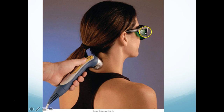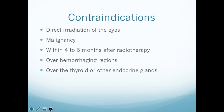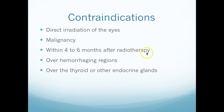Here's an example of application — the patient has goggles on, and you as the therapist will also wear goggles. You'll have parameters for the area you're going to dose and treat. Contraindications include direct irradiation of the eyes — hence the goggles — and malignancy, because ATP production and increased metabolic rate could feed a tumor. Within four to six months after radiotherapy the tissue is still vulnerable. Also contraindicated in areas of bleeding and over the thyroid or other endocrine glands.